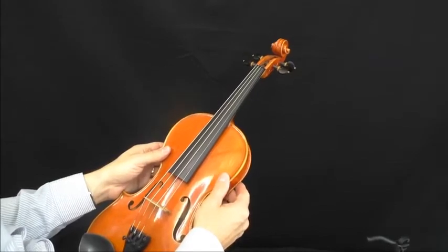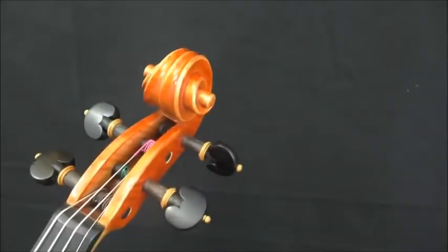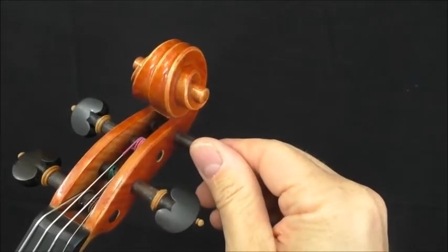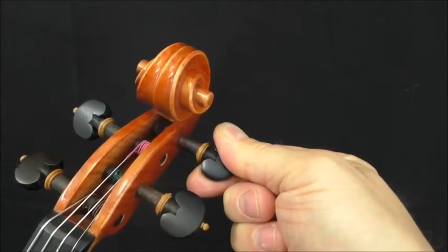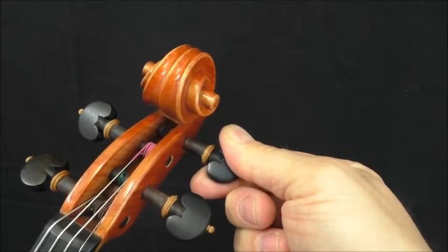With the violin in an upright position facing you, turn the pegs away from you to tighten the string, and towards you to loosen the string.